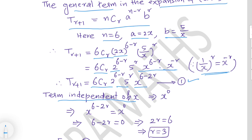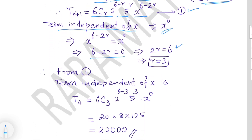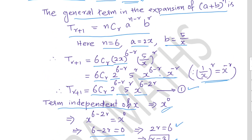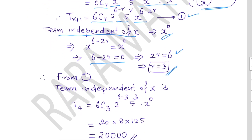Term independent of x means the x term equals x^0. So equate: x^(6−2r) = x^0, which gives 6 − 2r = 0, so r = 3. Substituting r = 3 back into equation 1, we get T4 (the fourth term): 6C3 · 2^(6−3) · 5^3 · x^0.